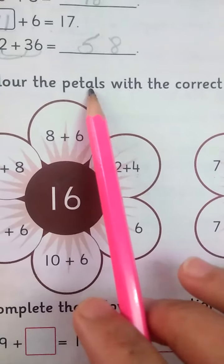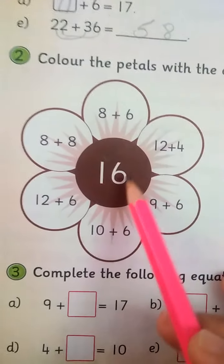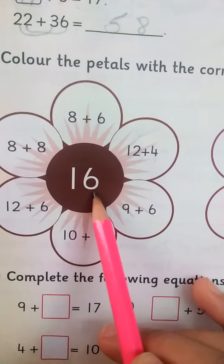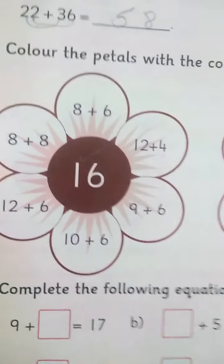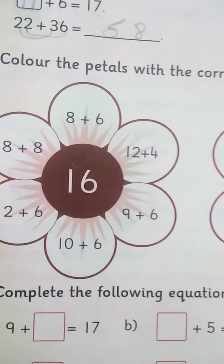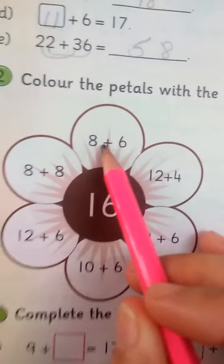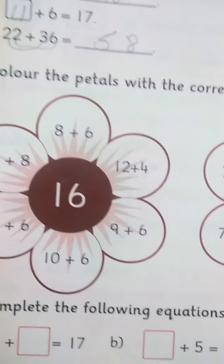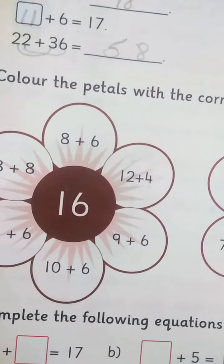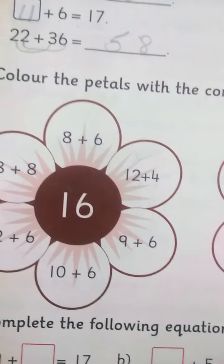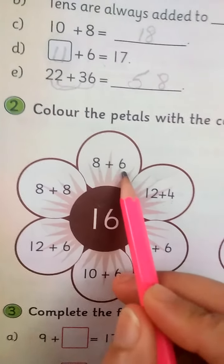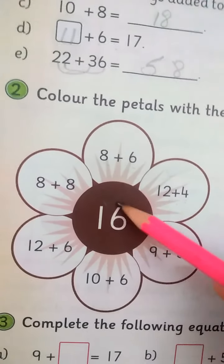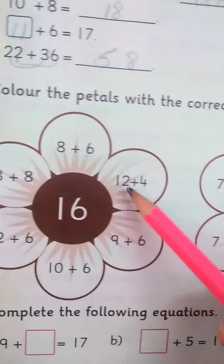Next question is color the petals with the correct answer. Now we have 16. You will see which answer equals 16. 8 plus 6, 8 plus 6 is equal to 14, not 16.